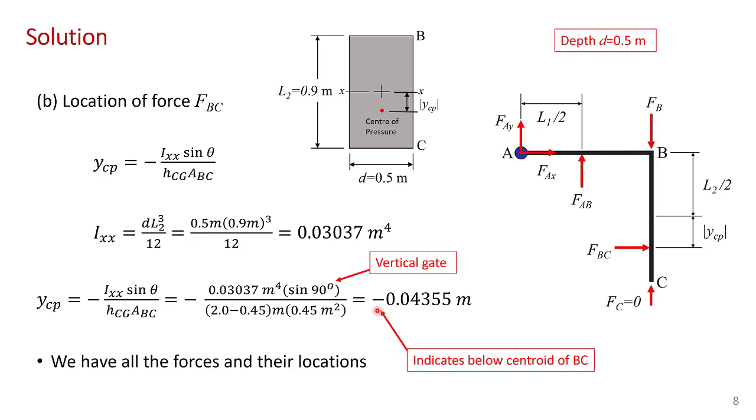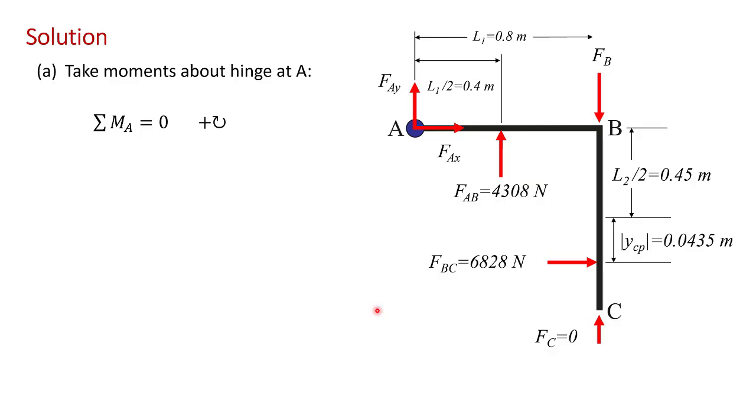So now we have all the forces and their locations. So we can simply apply these to the free body diagram. So this is just the free body diagram from part A, and I've inserted all the values for the forces and the distances. So now what we're going to do is take moments about the hinge at A in order to determine the force FB.